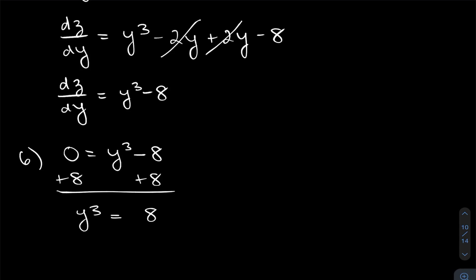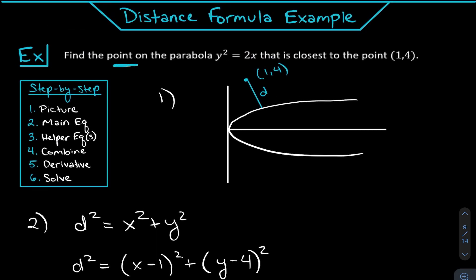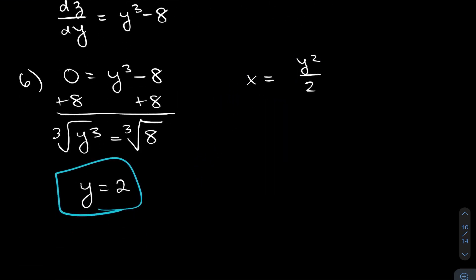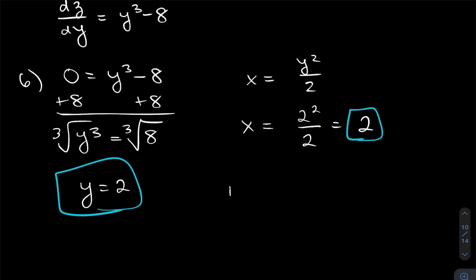With y = 2, use the helper equation x = y²/2 = 4/2 = 2. So the point on the parabola y² = 2x closest to (1, 4) is (2, 2).